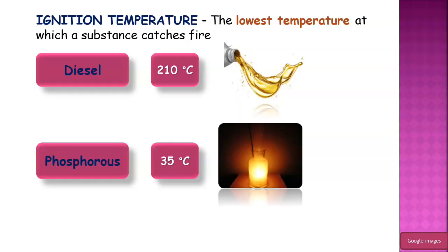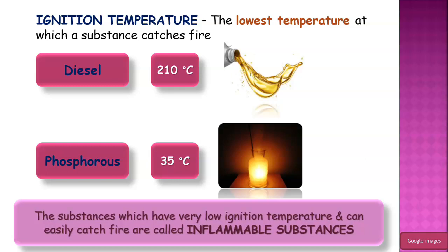Now let's look at another term — ignition temperature. It is the lowest temperature at which a substance catches fire. Different combustible substances will have different ignition temperatures. For example, diesel's ignition temperature is 210 degrees Celsius, meaning diesel will burn at that temperature. Phosphorus has an ignition temperature of 35 degrees Celsius — that is room temperature — so we have to keep phosphorus out of contact with oxygen; it is usually kept in kerosene. Substances which have very low ignition temperature and can easily catch fire are known as inflammable substances.